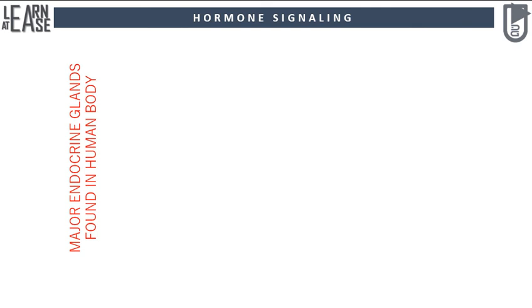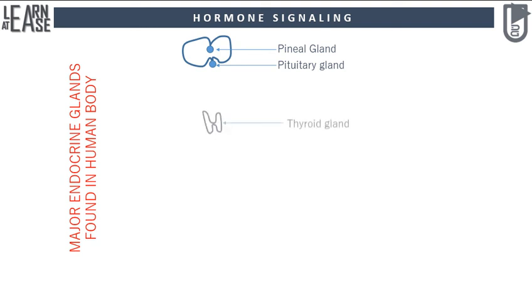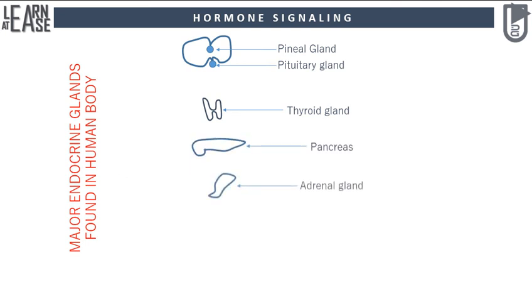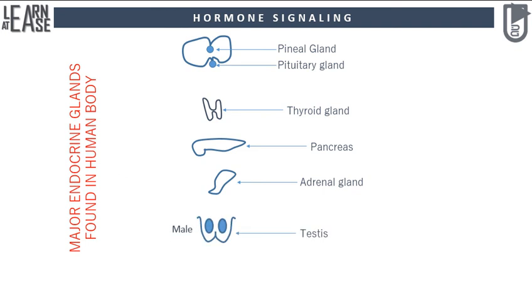Now I will show the major endocrine glands found in the human body. The pineal gland and pituitary gland are present in the skull region. The thyroid gland is located in the neck region. The pancreas and adrenal glands are found in the abdomen. The testes produce testosterone and are found in males. The ovaries produce female sex hormones and are found in females.